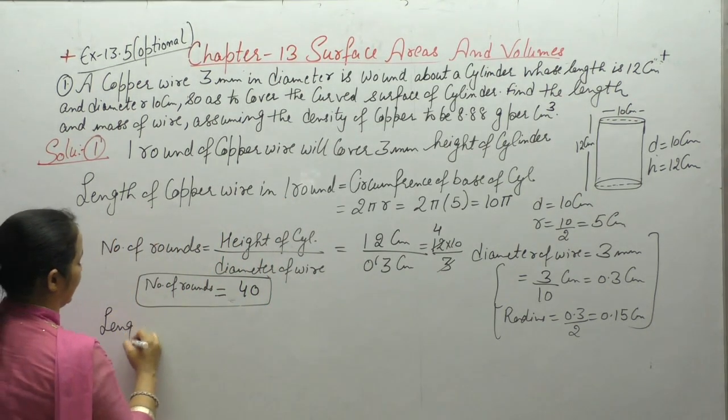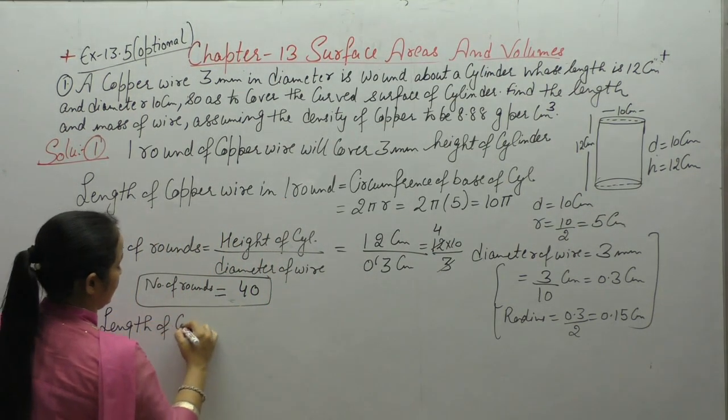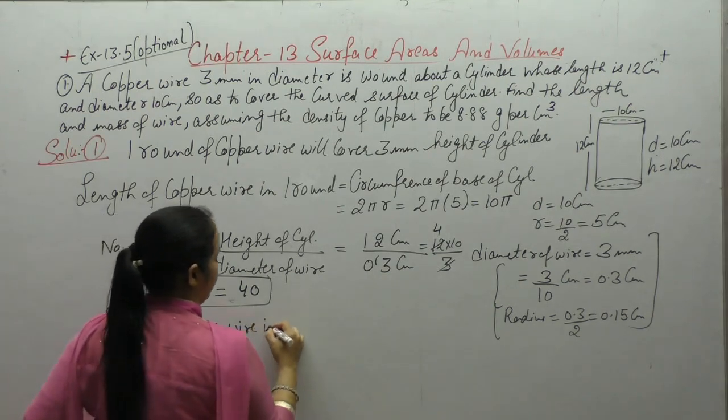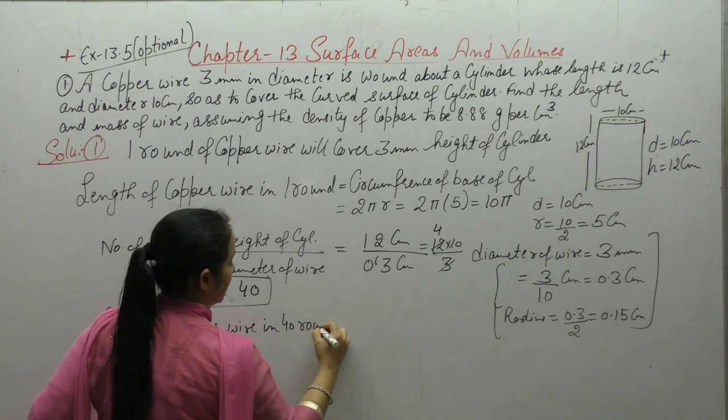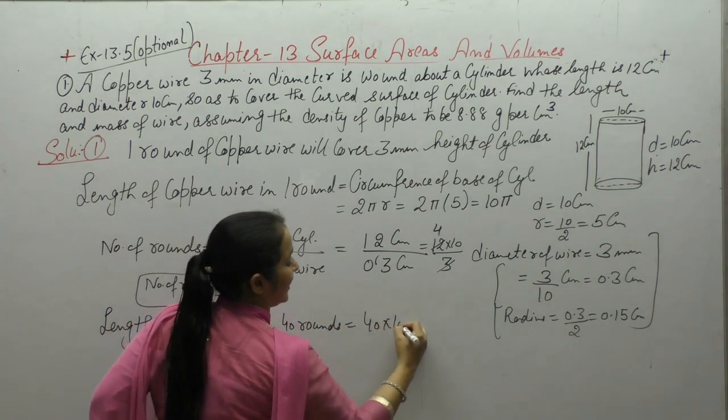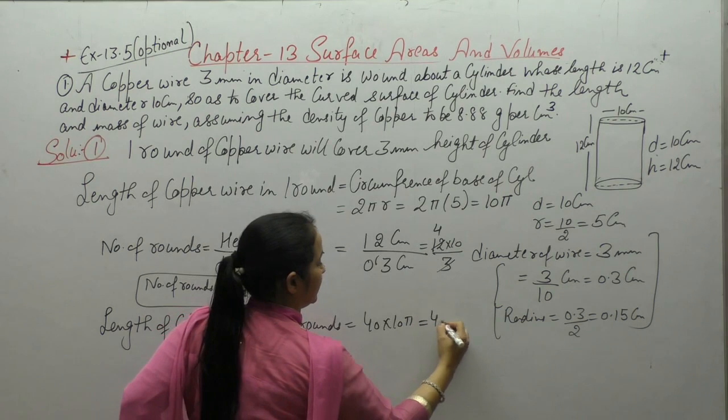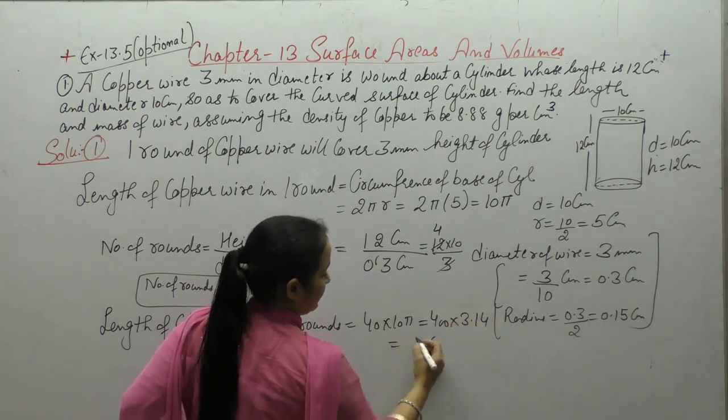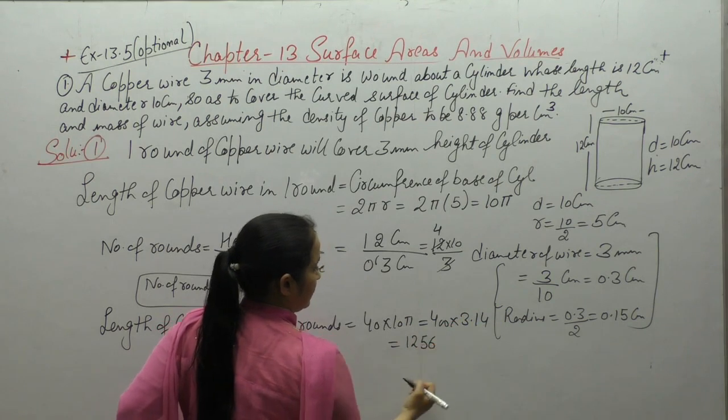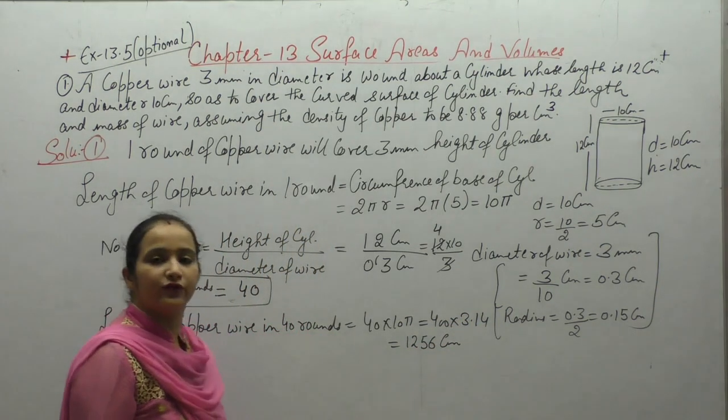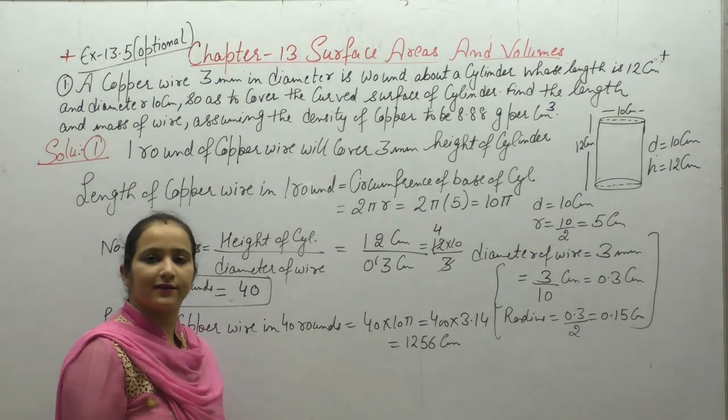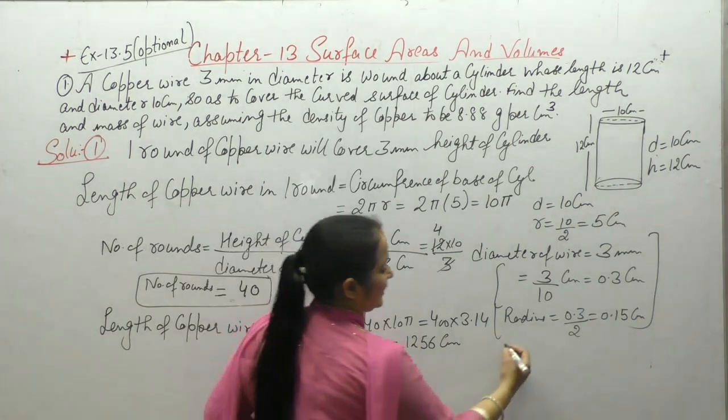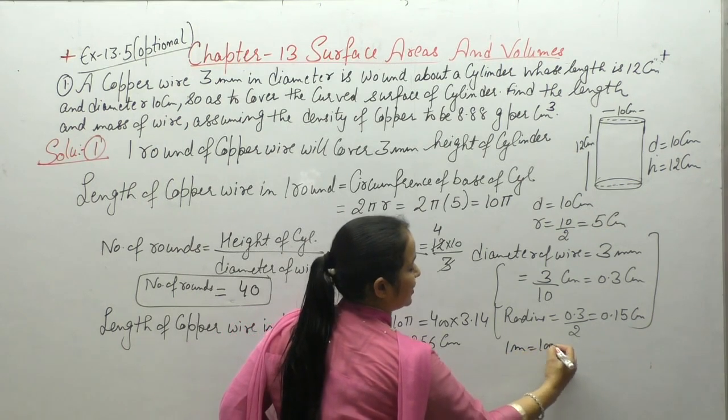So length of copper wire in 40 rounds - how much will it be? 40×10π. Put the value of π as 3.14 and multiply. 1256 centimeters.